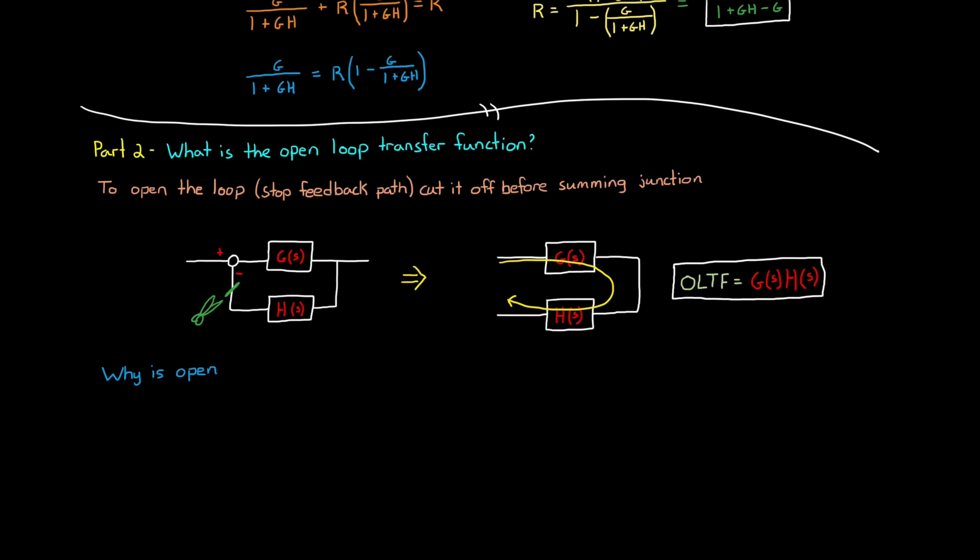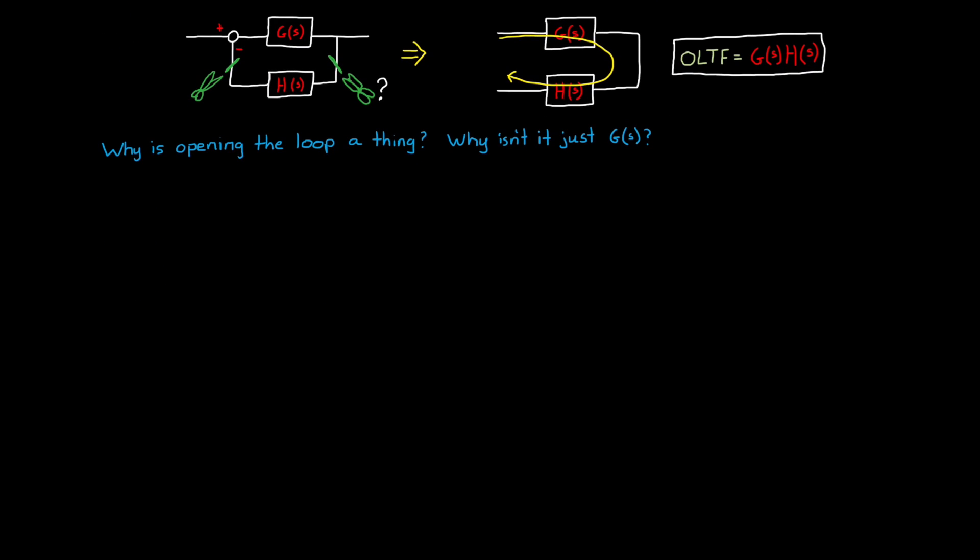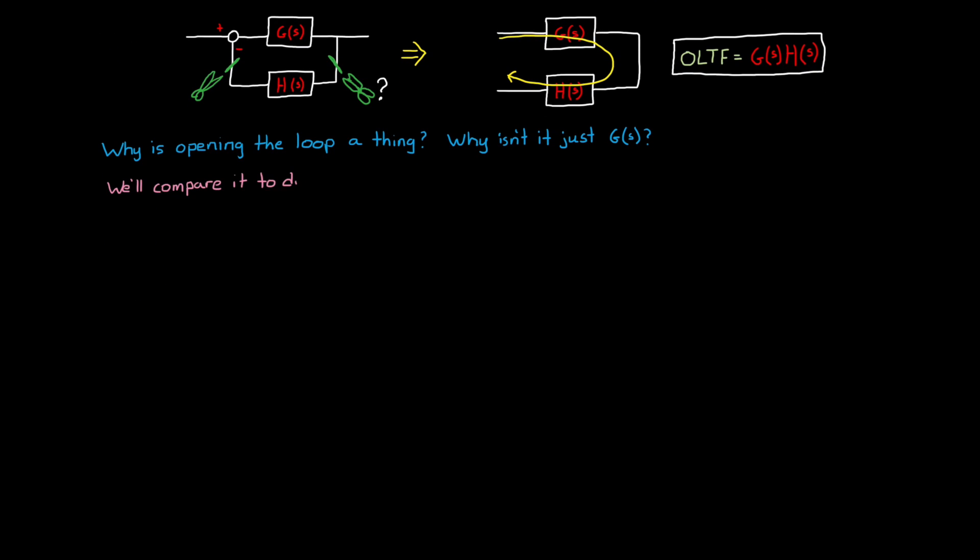Now the mechanics are easy, but why is opening the loop a thing that we do at all? For example, why don't we cut it at a different spot and have the open-loop transfer function just be G? To answer that, we'll do a thought exercise where you have to imagine you're driving a car. And as I like to do in these types of problems, I'll set up the closed-loop block diagram first, and then we can fill it in with information as we discuss it.